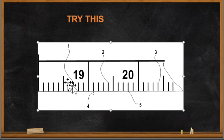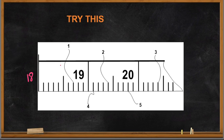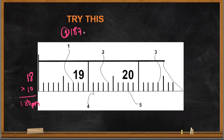For number one, we have 18 cm on the tape. To convert to mm: 18 times 10 equals 180 mm, then counting 181, 182, 183, 184, 185, 186, 187 — so number one is 187 mm. In centimeters, counting 0.1, 0.2, 0.3, 0.4, 0.5, 0.6, 0.7 beyond 18 cm, that is 18.7 cm.